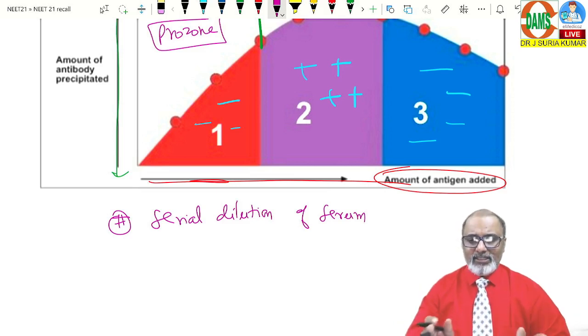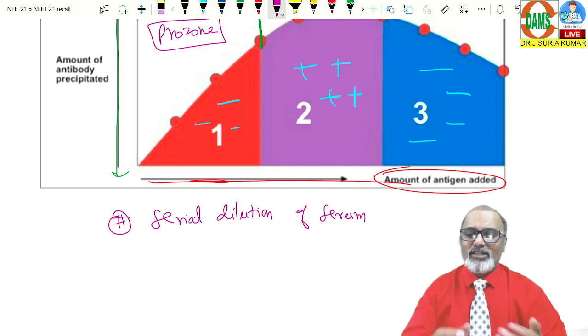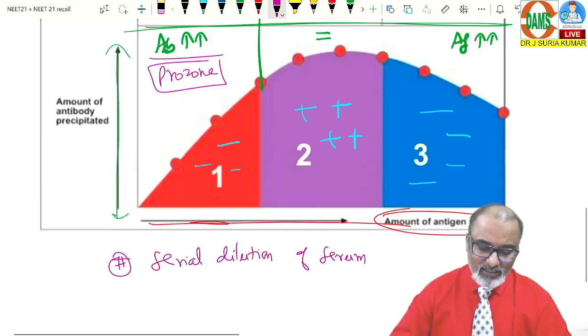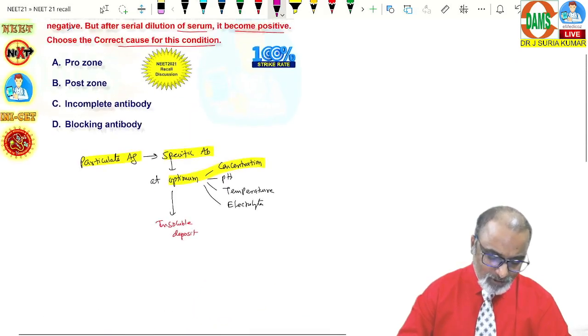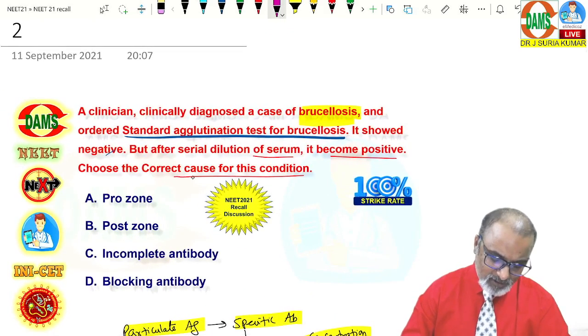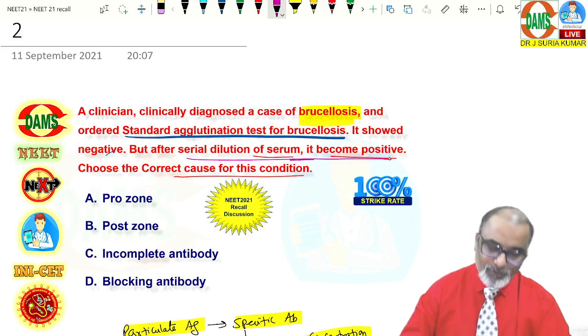When you dilute the serum, at which concentration the antibody antigen meets optimum concentration, you can get the reaction. Because of the reason, later, after serial dilution, when they meet the optimum concentration, it becomes positive. That is the reason.